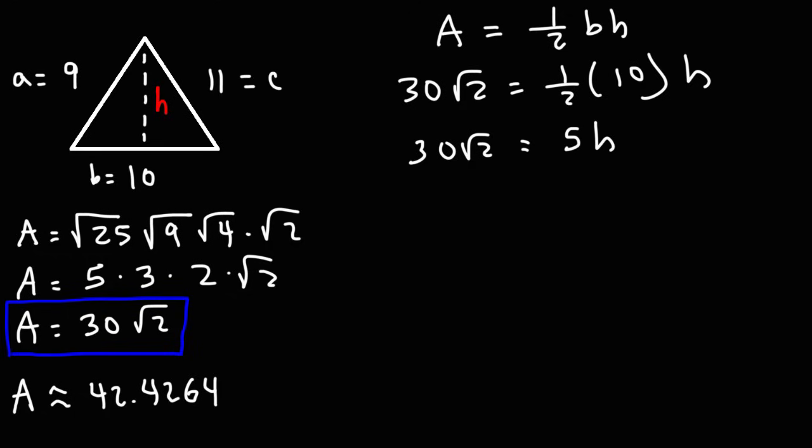Now to get h by itself, what we need to do is divide both sides by 5. 5 divided by 5 is 1. And on the left, we have 30 divided by 5, which is 6.